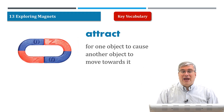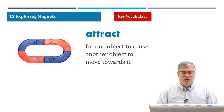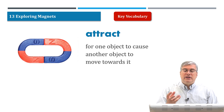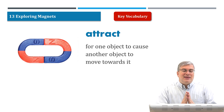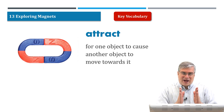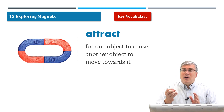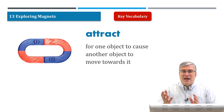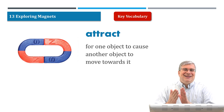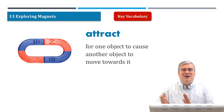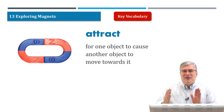We always begin with a vocabulary section. Our first word is attract. Attract means for one object to cause another object to move towards it. We're talking about magnetism here, but attraction can also be between different people — if you see somebody and really like them or their personality, you are attracted to that person. You want to move closer to that person and be with them. Magnets do the same thing; their attraction is just natural.